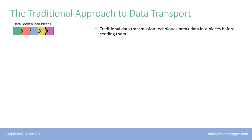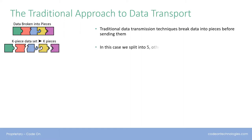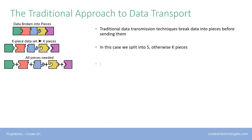Traditional techniques break data up into pieces before sending them. In this example, we've divided our data into five pieces. For the general case, we'll have k pieces of data. If all of these k pieces reach your chosen destination, you can recompile and view your original data.